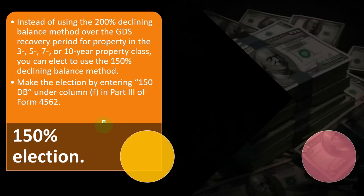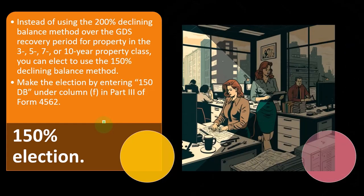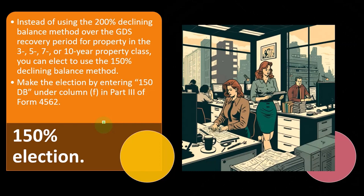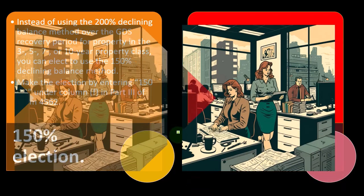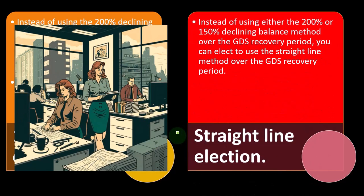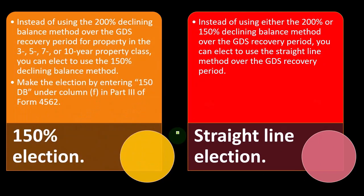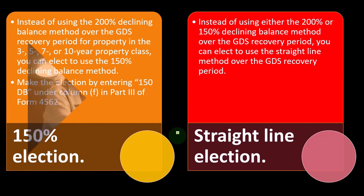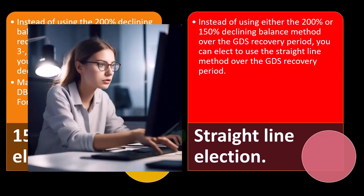Make the 150% election by entering "150 DB" under column F in part three of Form 4562. For the straight-line election, instead of using either the 200% or 150% declining balance method over the GDS recovery period, you can elect to use the straight-line method over the GDS recovery period.